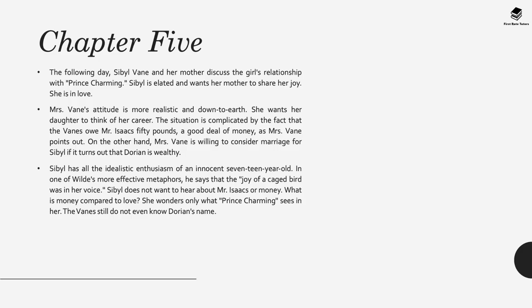In chapter five, we learn a little more about Sybil Vane. We find her and her mother discussing the girl's relationship with this Prince Charming—Sybil seems really elated and wants her mother to share her joy. However Mrs Vane, her mother, is far more realistic, cynical and down to earth—she wants her daughter to think of her career. The situation is complicated by the fact that the Vanes owe Mr Isaacs 50 pounds, which is a great deal of money, and Mrs Vane wishes for Sybil to pay off this debt. Sybil has the enthusiasm of an innocent 17-year-old, and in one of Wilde's more effective metaphors, he says 'the joy of a caged bird was within her voice.'